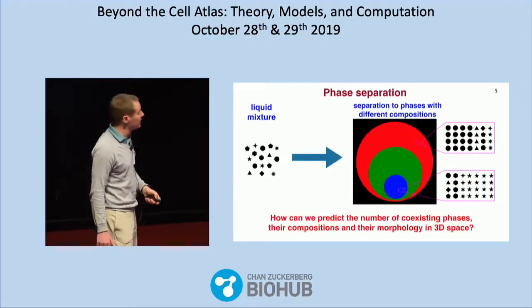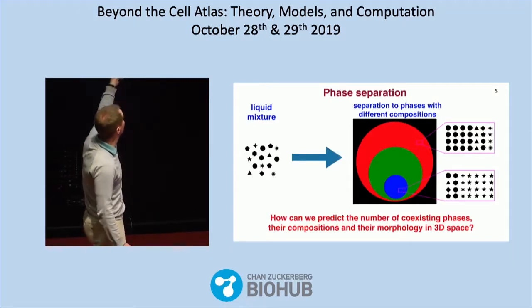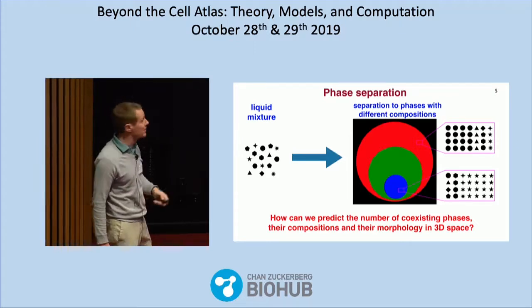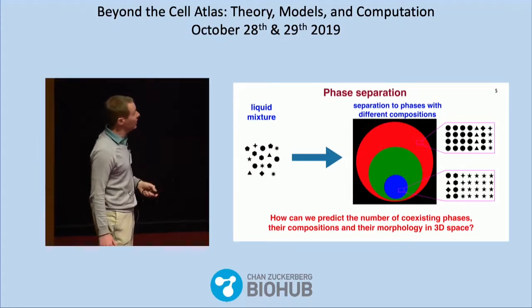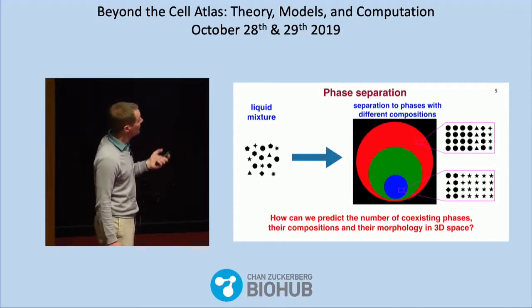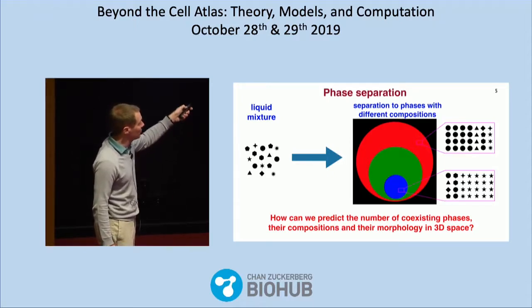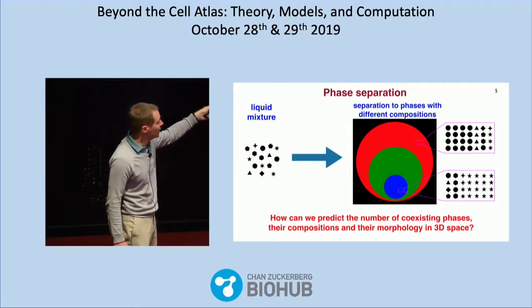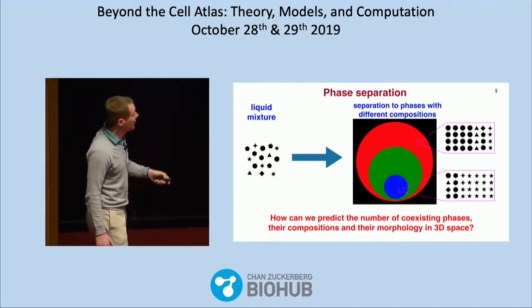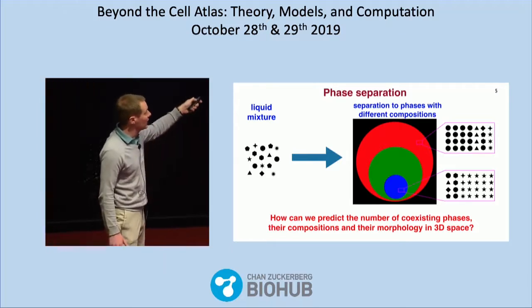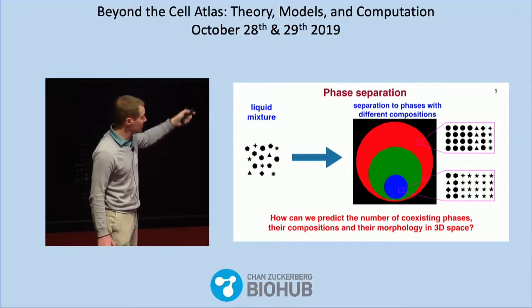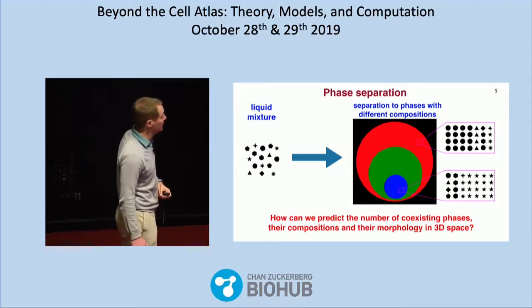Inspired by this, we asked ourselves the following questions. Given a liquid mixture of different types of molecules with different symbols and concentrations, and knowing how they interact with each other, we would like to come up with tools that tell us: how many different phases will form, what will be the composition of different phases — for example the blue phase may have more star molecules and the red phase may have more circle molecules — and how will they arrange in space.